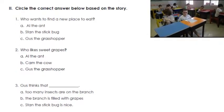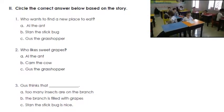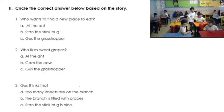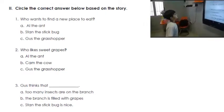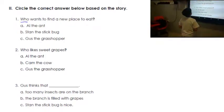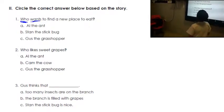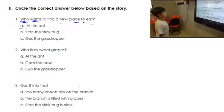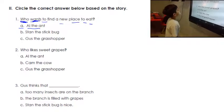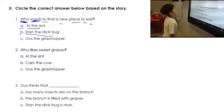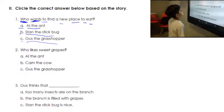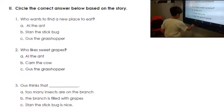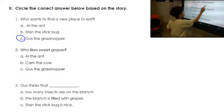Moving on to the second question. Circle the correct answer below based on the story. Let me have Amir come to the board please. Read the first one. Who wants to find a new place to eat? Is it A, all the ants, B, Stan the stick bug, or C, Gus the grasshopper? What is the right answer? The grasshopper. Bravo. Can you please use the pen and circle the right answer? So Gus the grasshopper is the right answer. Thank you Amir.